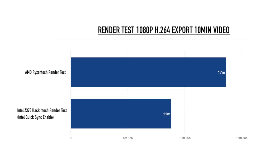For the render test — a 1080p H.264 export of a 10-minute video — the AMD Ryzen hackintosh with 8 cores and 16 threads took 17 minutes. The Intel Z370 with an i5-8400, a 6-core CPU without hyperthreading but with Intel QuickSync enabled, took only 11 minutes. If you're planning on building a hackintosh for rendering video using Final Cut or iMovie, I would definitely recommend going with an Intel-based hackintosh over an AMD one.